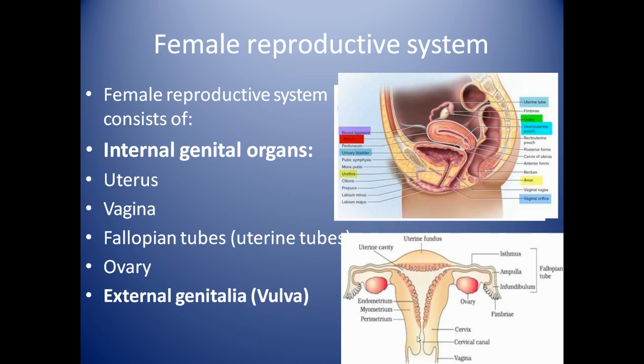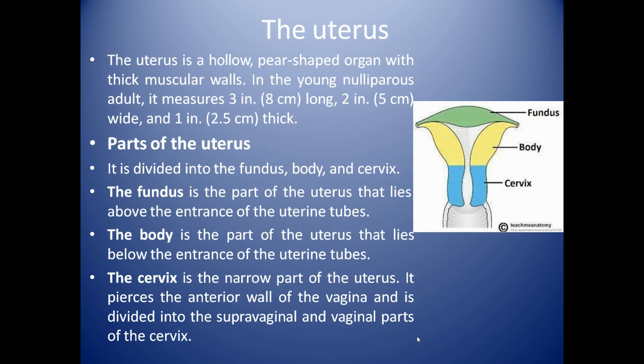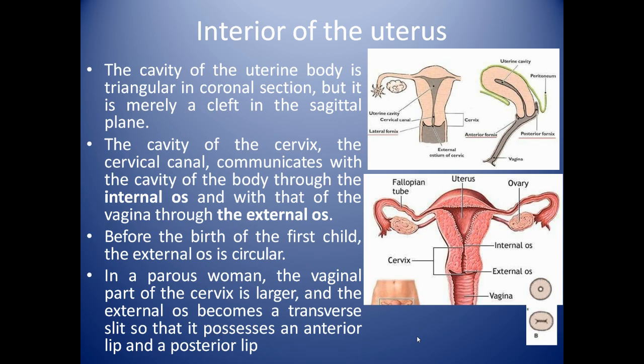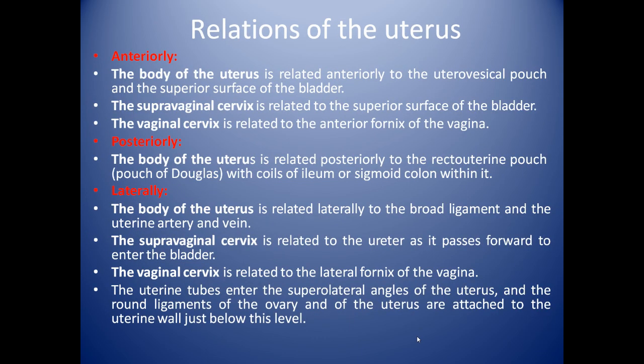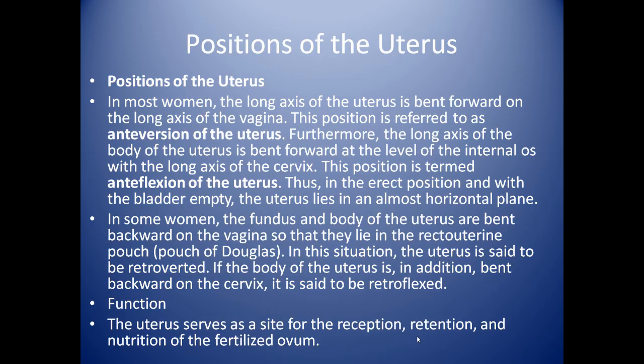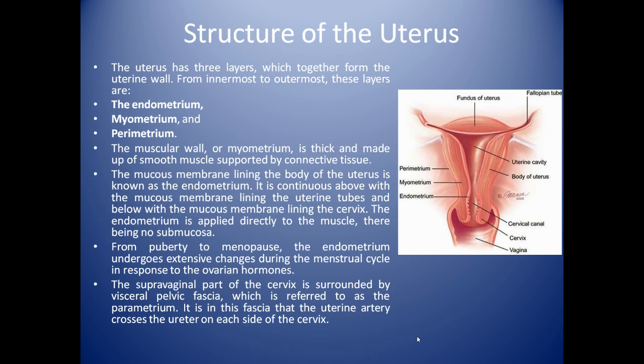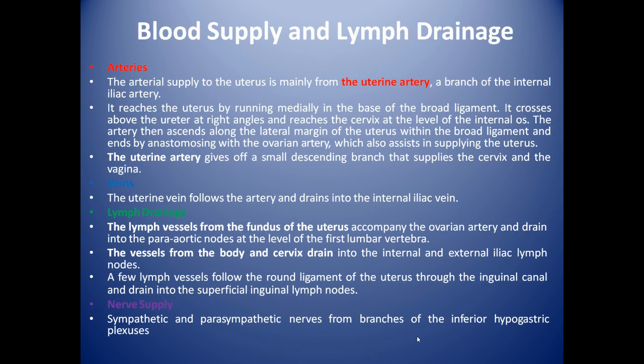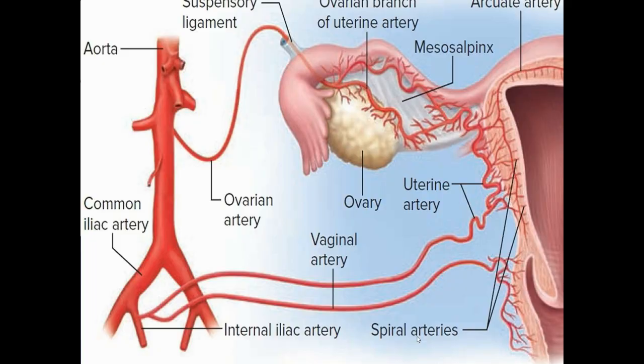We have discussed that the female reproductive system consists of some structures: the uterus, vagina, fallopian tube, ovary, and external genitalia. We have studied the structure of the uterus, the parts of the uterus, how the uterus looks internally, its relations, position, blood supply, and lymphatics of the uterus.